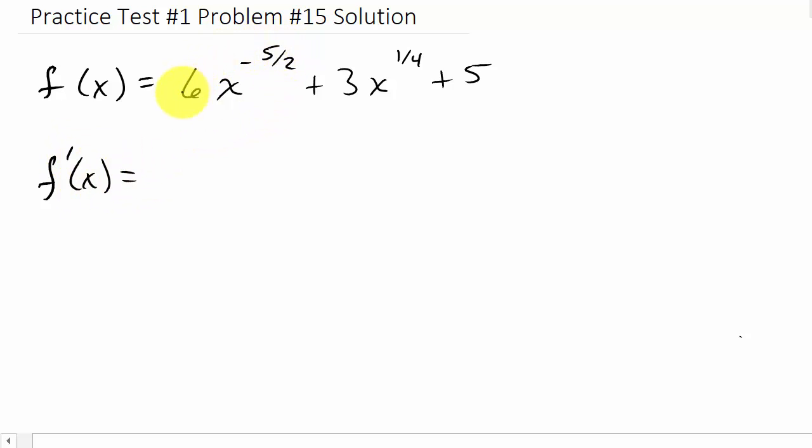So I'm going to multiply, bring the negative 5 halves down. That's going to give me negative 15. So negative 5 halves times 6. Those cancel. Negative 15. Subtract 1, so that's negative 7 halves.